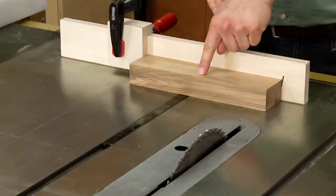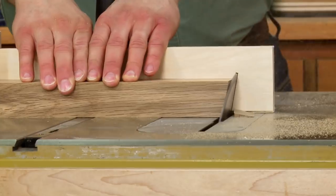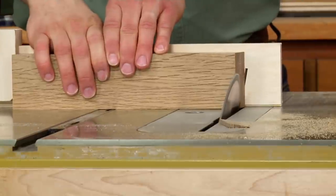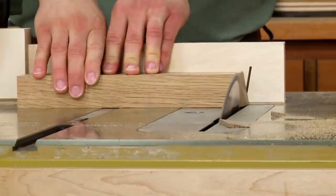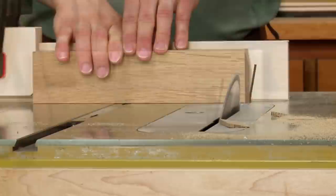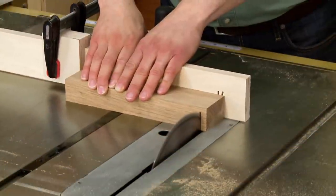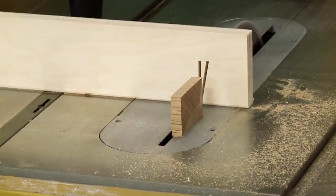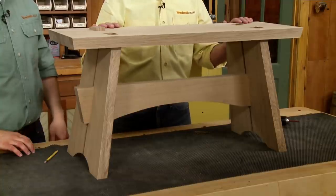I started with a long blank, then cut a bevel on each face. Finally, I cut the tenon to its final length. All that's left now is to glue those false tenons in place, and this project's complete.